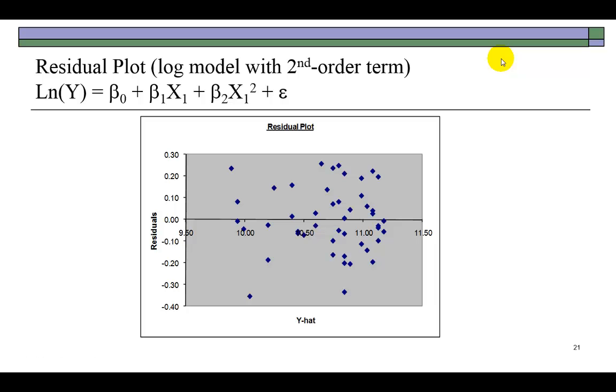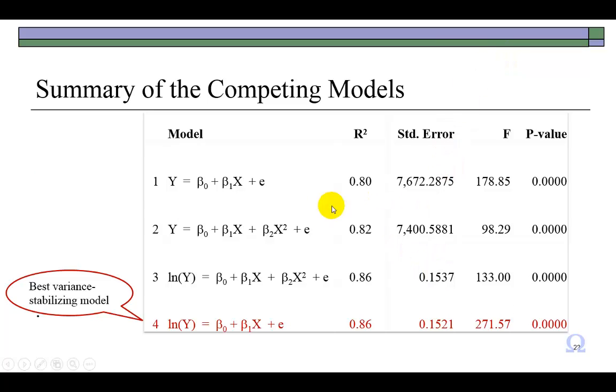This is my general summary of all the models I ran. With the logarithmic model allowing the curvature term to stay, the coefficient of determination of 86% is identical to what it would be if I did not include the curvature term. This coefficient here is not statistically significant. So really, in my view, the best variance stabilizing model is the logarithmic model that is based on the simple linear model, because it is more parsimonious. It gives us the same flavor as we would have gotten if we had allowed this guy to stay in the model. This is what I go with. This wraps up this presentation.